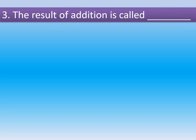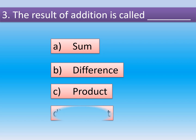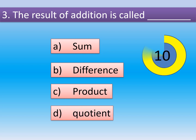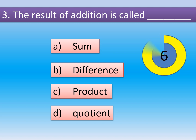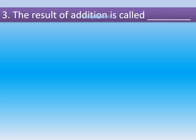Question 3: The result of addition is called dash. Option A: Sum. Option B: Difference. Option C: Product. Option D: Quotient. The correct answer is Option A, Sum. The result of addition is called sum.